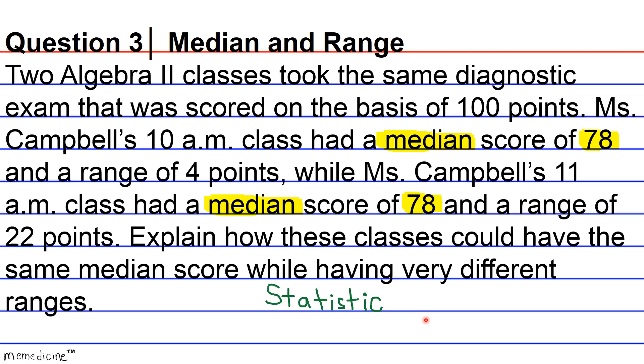The range is one way to report what's called measure of spread. So in this problem, these two classes, Ms. Campbell's 11 a.m. class and her 10 a.m. class, they had the same median score of 78. So this can be for her 10 a.m. and this can be for her 11 a.m. class. However, the data for her 10 a.m. class is going to be more tight. It's going to be less spread out than the range of values for her 11 a.m. class.